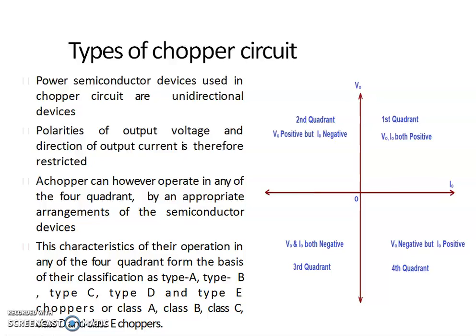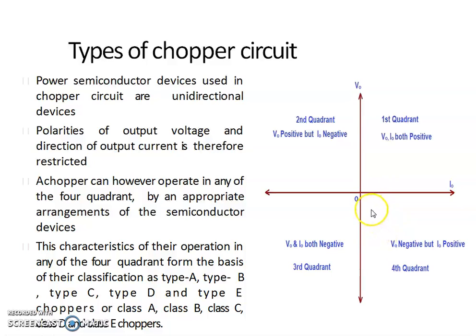If a chopper provides first and second quadrant operation, that type is known as Class C or Type C chopper. If a chopper circuit provides first and third quadrant operation, that is Class D or Type D chopper. If a chopper circuit provides all four quadrants of operation, that type is known as Class E or Type E chopper. This is the classification of chopper based on quadrant of operation.